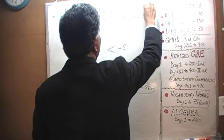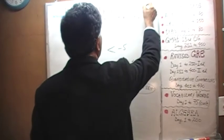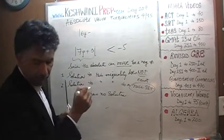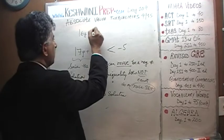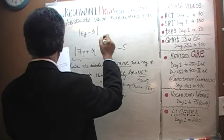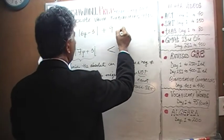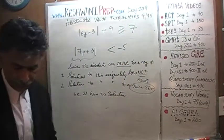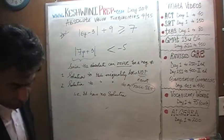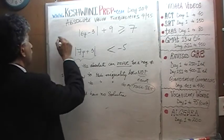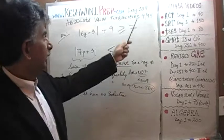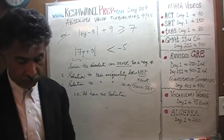This is for tomorrow. Absolute value of 6Y minus 3 plus 9 is greater than or equal to 7. That is your homework for tomorrow. I am not going to do it right now. I want you to do it yourself. Once you have done it then watch the next video, day number 109. Then and only then I want you to watch the next video.